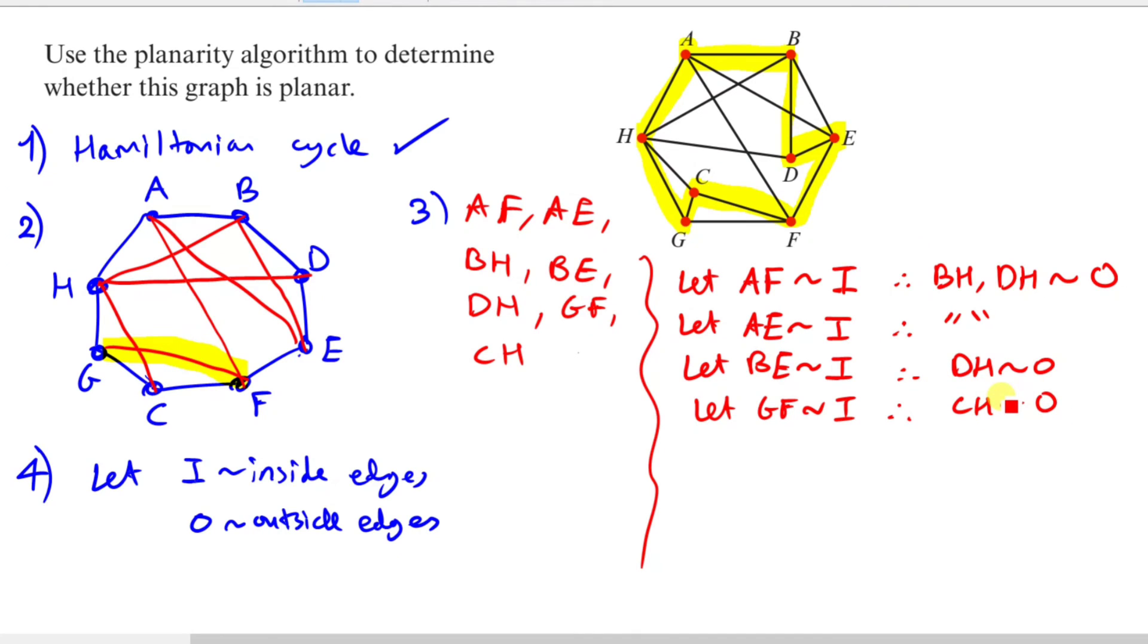All seven have been covered because we've already specified three of them: BH, DH, and CH as being outside, whereas the AF, AE, BE, GF will be inside.